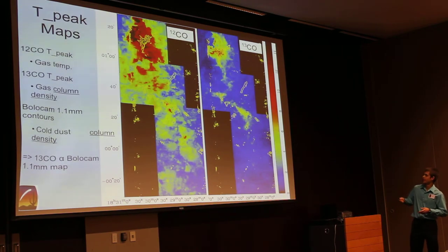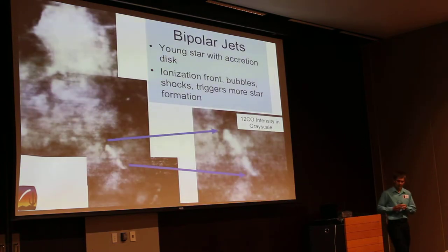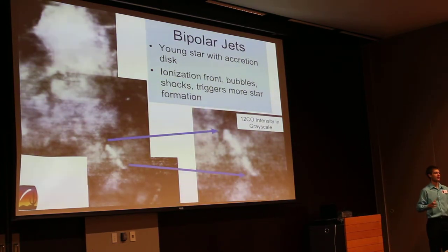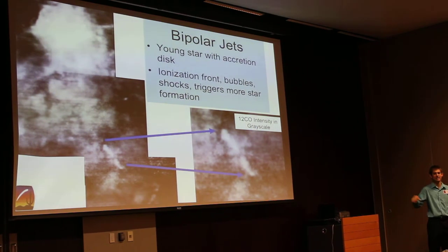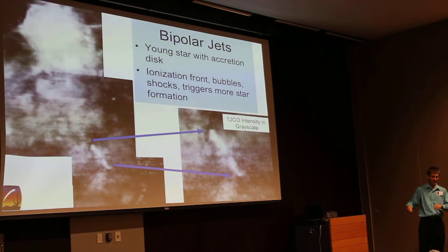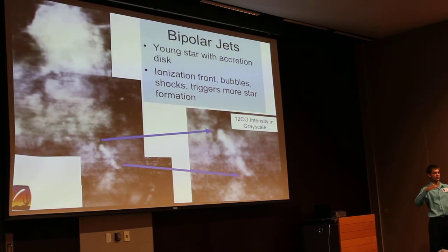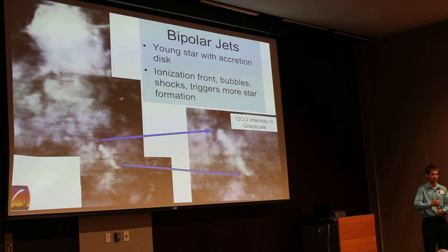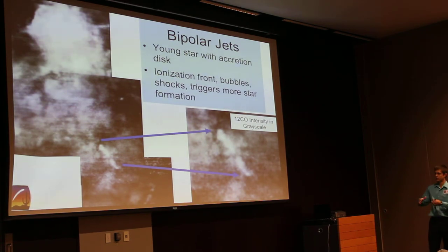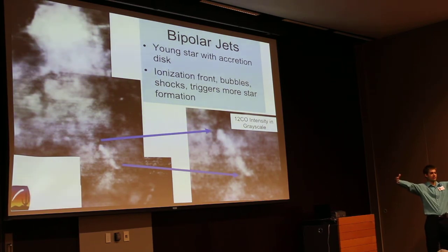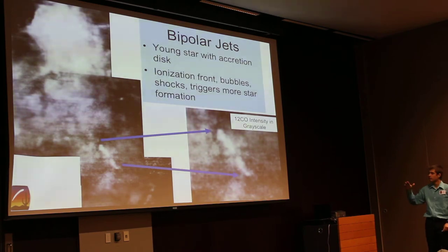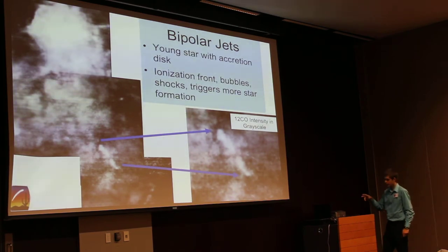If you take a 12-CO integrated intensity map and stretch the color scale, you immediately see this feature — a bipolar jet. When a young star has an accretion disk, material falls in, and to conserve energy and angular momentum, the star emits highly energetic particles at high velocities perpendicular to the accretion disk. These ionize hydrogen, carving out a bubble in the molecular gas that shocks the surrounding material, heats it up, creates pressure instabilities, and ultimately forms more stars. Looking at where these turbulent regions occur in our data infers the cloud dynamics.